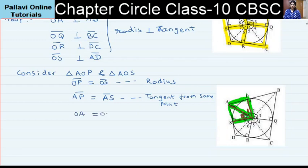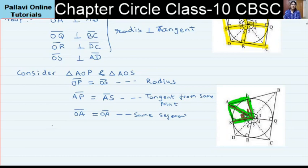OA equals OA — same line segment. In this way, we can prove that triangle AOP is congruent to triangle AOS by the SSS (side-side-side) congruence criterion.